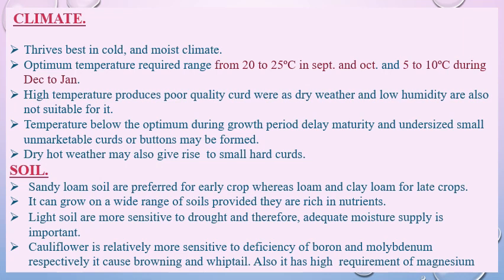Climate required for the cultivation of cauliflower: it thrives best in cold and moist climate. The optimum temperature required ranges from 20 to 25 degree Celsius in September and October, and 5 to 10 degree Celsius during December to January. High temperature produces poor quality of curd, whereas dry weather and low humidity are also not suitable for it.